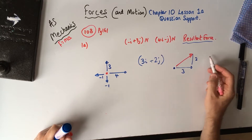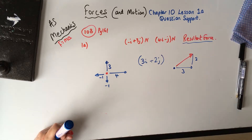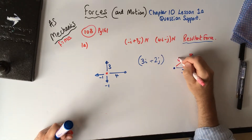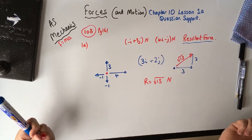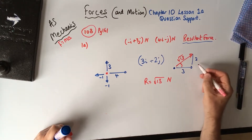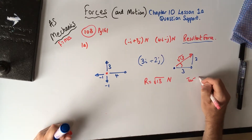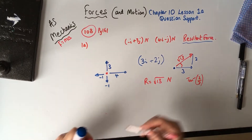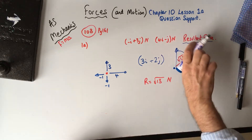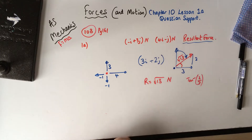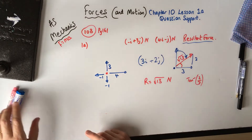By Pythagoras, the magnitude is the square root of three squared plus two squared: nine plus four is thirteen, so it's root 13 Newtons. It doesn't ask for the angle, but if it did, the angle to the horizontal would be inverse tan of two thirds. And if it wanted it as a bearing, you take that off 90 degrees to give the angle turning clockwise from north. That's question 1A from 10B.